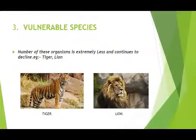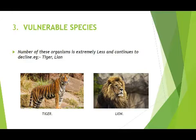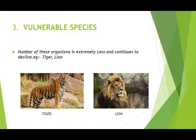Vulnerable species means organisms that are common but extremely less in number and continuously decreasing, and are likely to become endangered. Their reducing rate is a matter of concern. Examples include tiger, lion, Asian elephant, and green turtle.